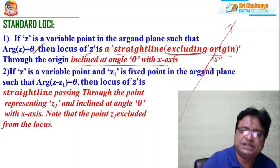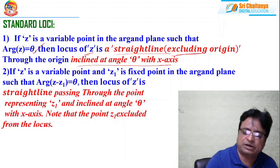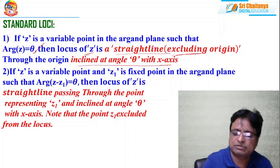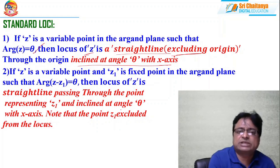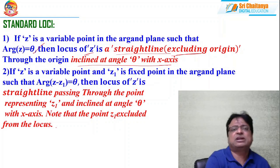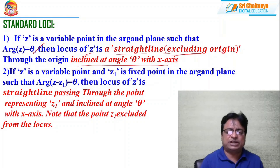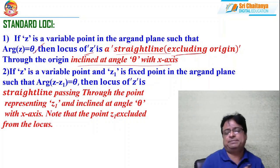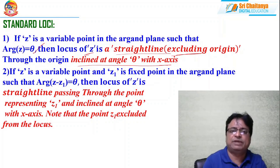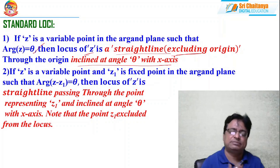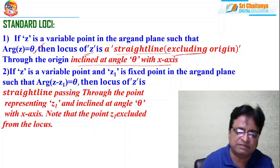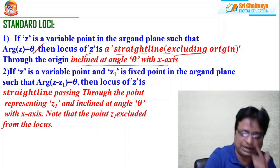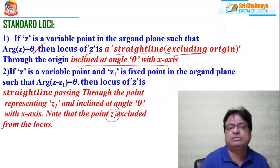Number two: if z is a variable point and z1 is a fixed point in the argand plane such that argument of (z − z1) is equal to θ, then the locus of z is again a straight line making an angle θ with the x-axis, with z1 excluded. This is the generalized version of the previous case — there, argument of z equals argument of (z − 0); here, we simply replace 0 with z1. So whenever argument of (z − z1) is given, the locus is an infinite ray excluding the point z1.